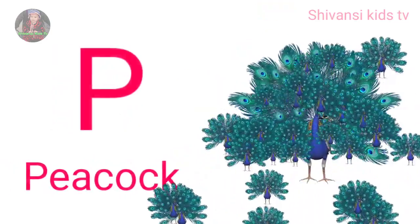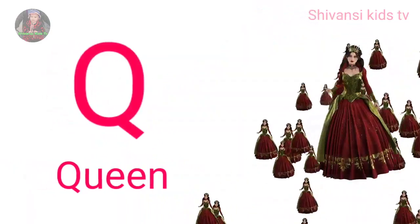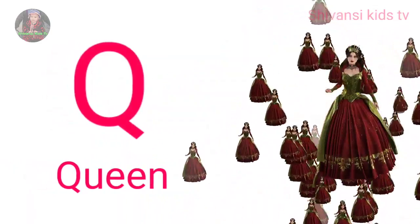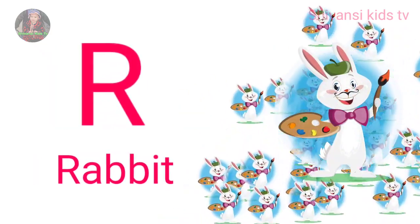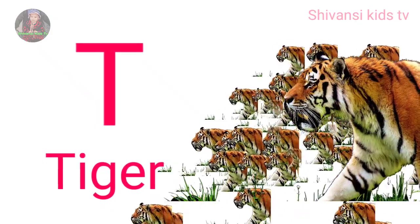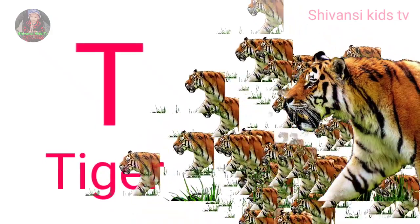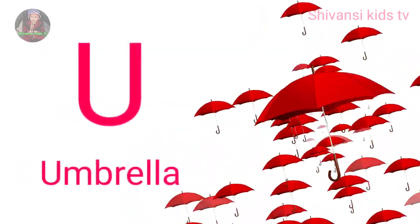P for peacock, Q for queen, R for rabbit, S for sheep, T for tiger, U for umbrella.